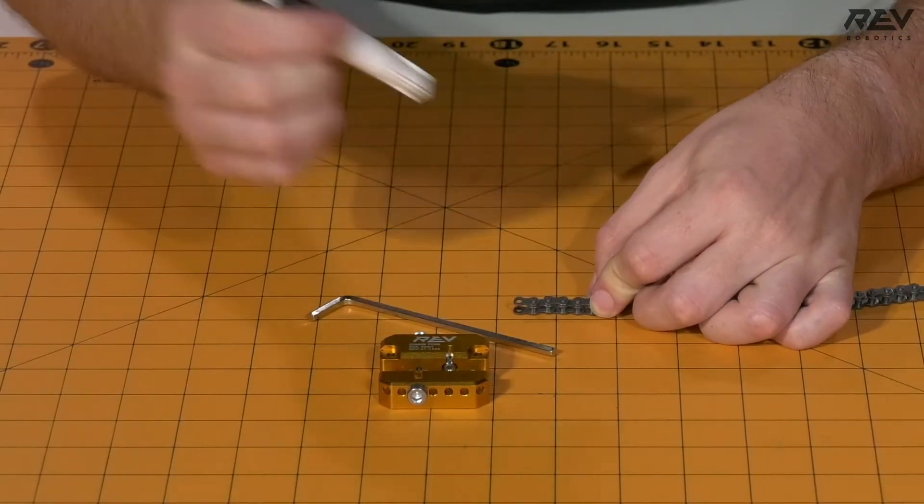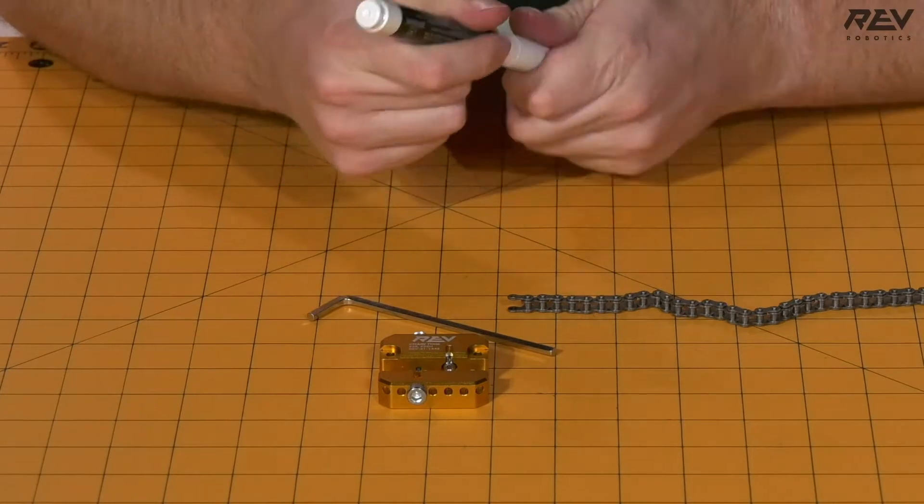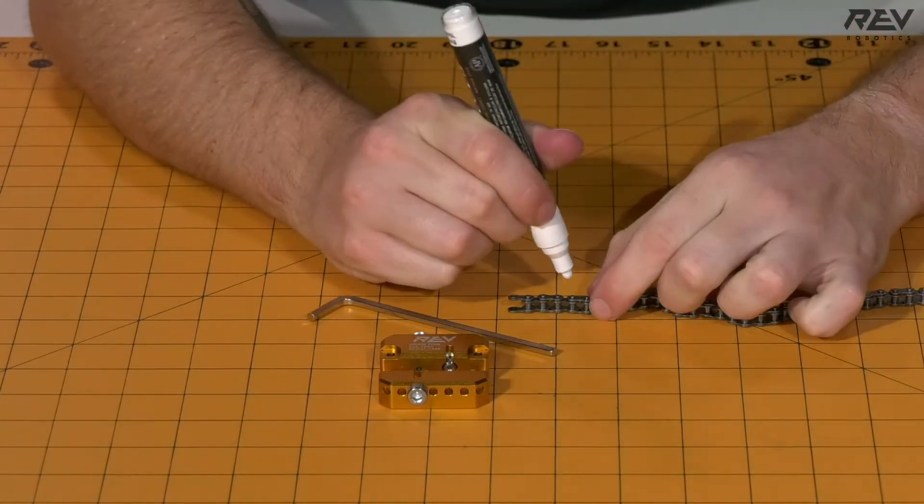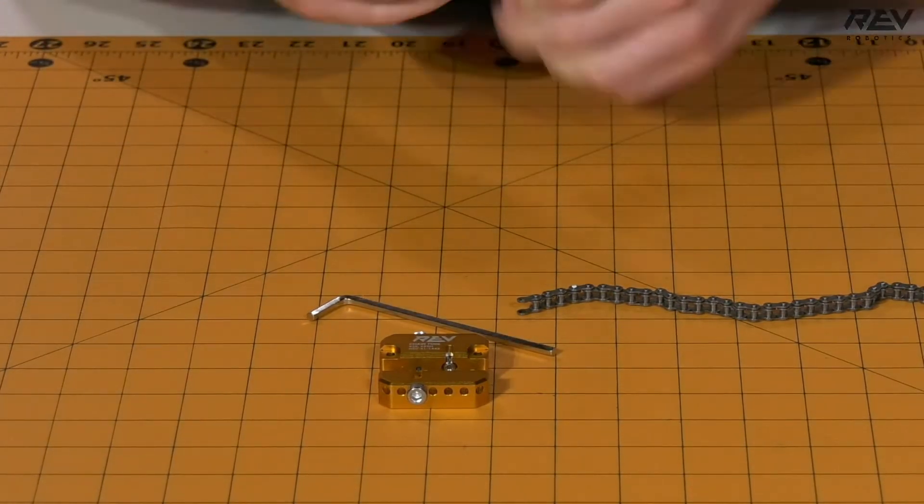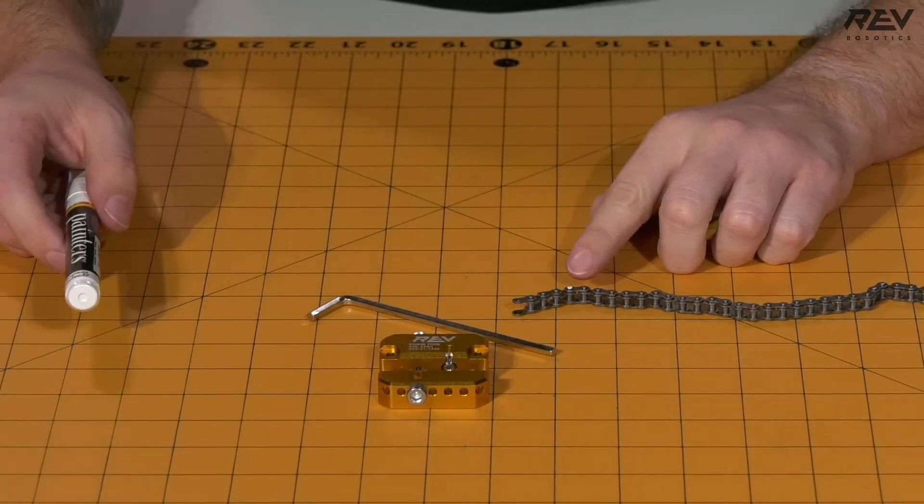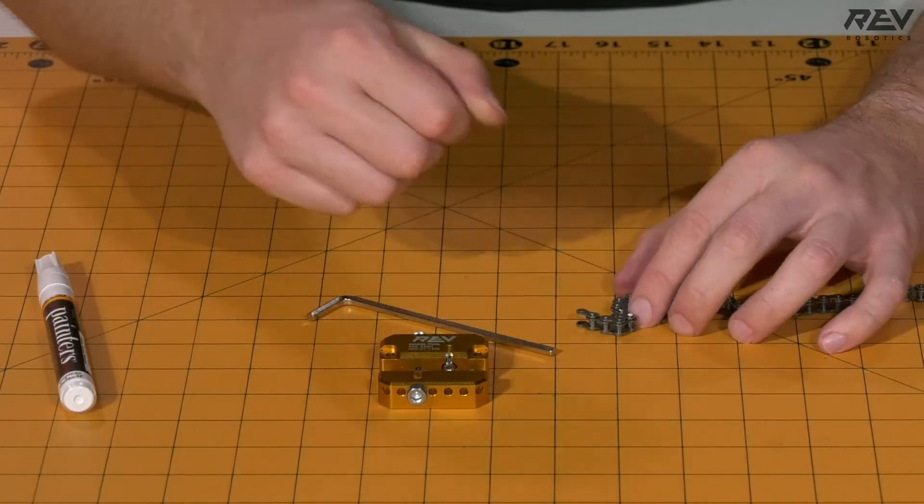we're going to go ahead and take our paint pen and we are going to mark the pin of that link. This way we know that we need to break the white pin through on our chain tool when we do this later.